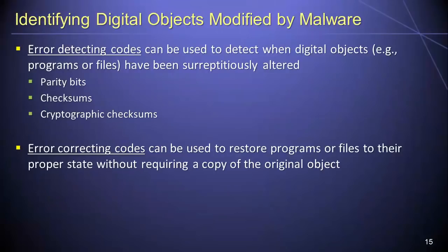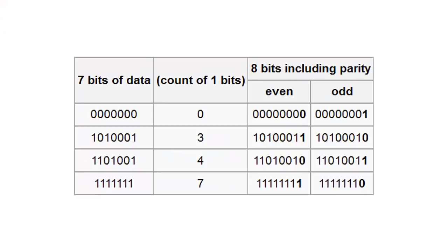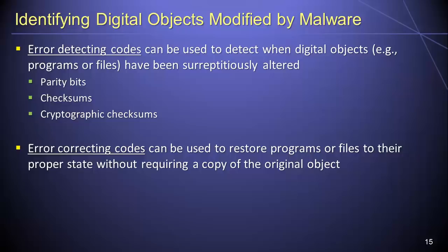Among the most important tools available for identifying when a digital object has been modified by malware are error-detecting codes. There are several varieties, including parity bits, checksums, and cryptographic checksums, which, when used properly, can help us detect when a program or file has been surreptitiously altered by a malware program.